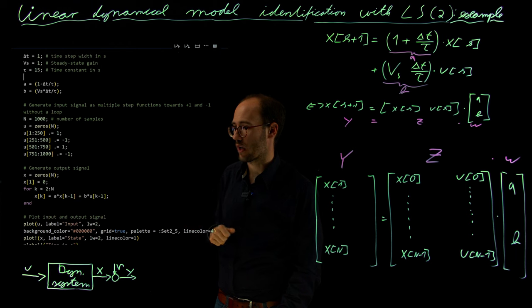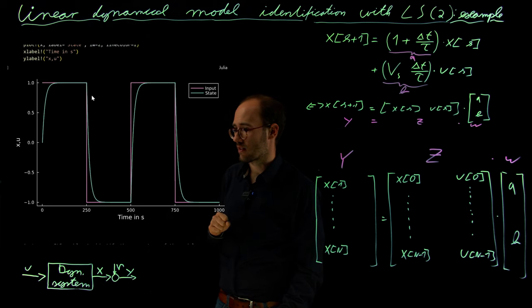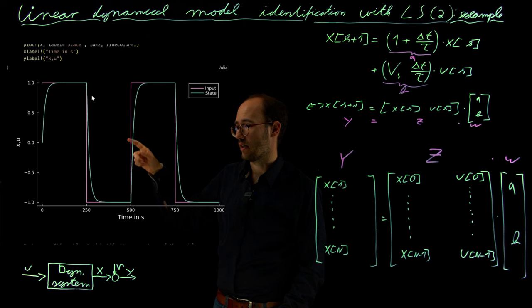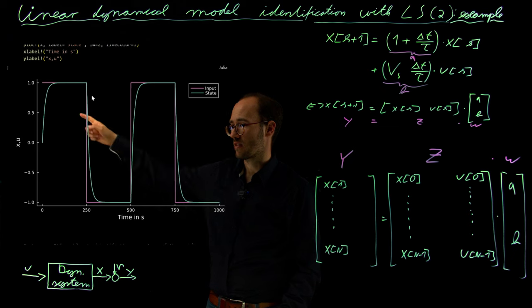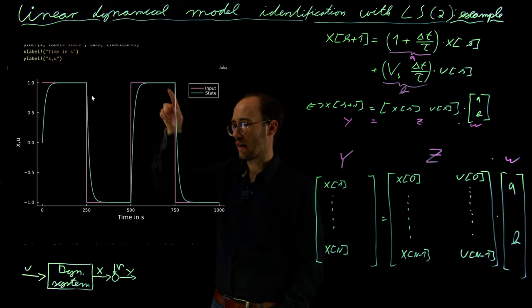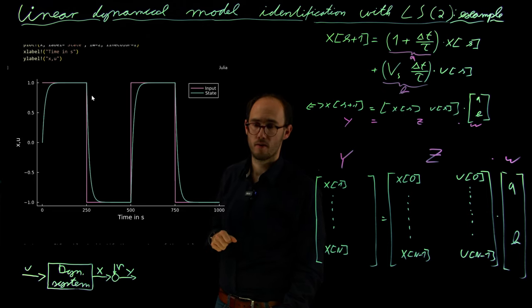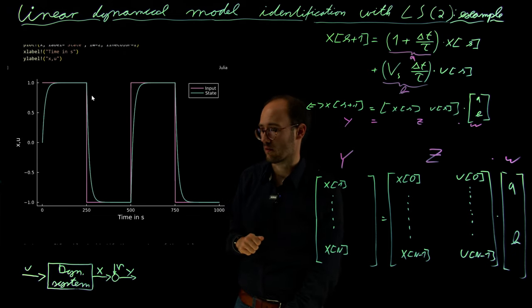And with that, we basically go through our model. So that would be a simulation of our model. In reality, we would get this model outputs via measurements. But here for the simulation, we would just simulate them ourselves. And if we just plot the system response for the purple input, we get this greenish output, the state output. So this is basically our input jumping around between 1 and minus 1 in a step-like manner. And we get this typical delayed response, first order PT1 response of a system, which could be some kind of a low pass filter, for example.